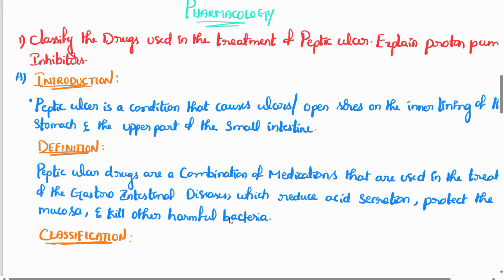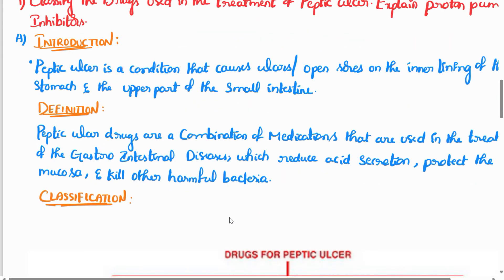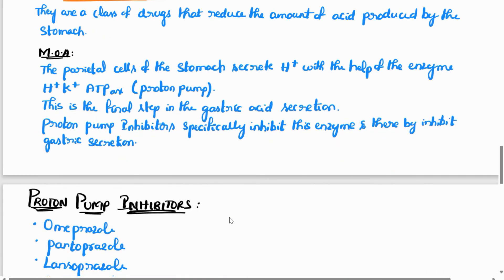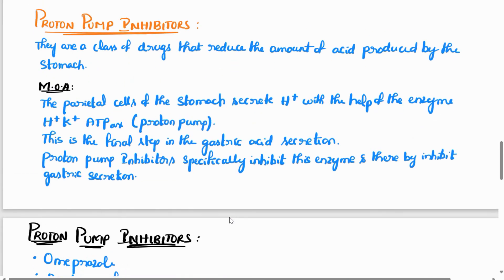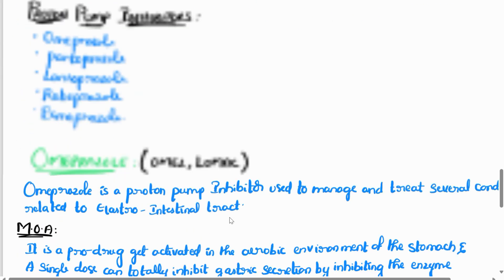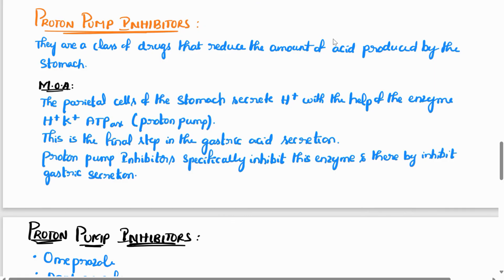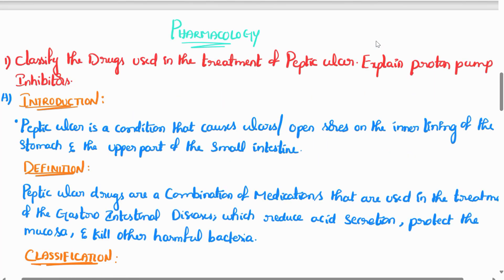Suppose you have a 5-mark question: explain proton pump inhibitors. You do not need the full disease introduction or classification — just explain proton pump inhibitors directly using the drug pattern. Thanks for watching this video. Please like, share, and subscribe to the Nursing Zone channel.